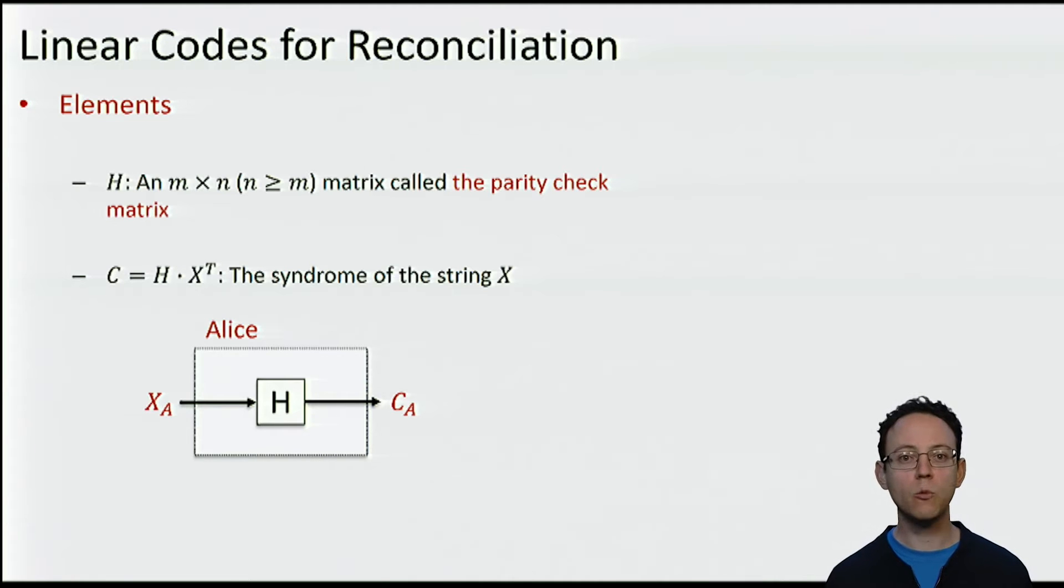Now let's go back to the reconciliation scheme. First, we will zoom into the encoding step performed by Alice. The reconciliation scheme is based on linear codes. Given a parity check matrix H and Alice's vector xA, the encoding of xA is its syndrome. That is, the message that Alice sends to Bob for information reconciliation is the syndrome of xA.